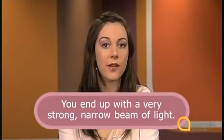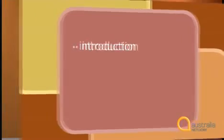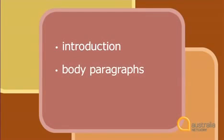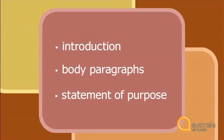Let's review how Imogen has structured her explanation. First, there was an introduction — she told us we were talking about the laser and gave some background. She then moved into the body of the description: she told us it is made up of three parts and listed them. In your writing, you might write three separate body paragraphs, one for each part. Then you'd finish off with a statement of purpose — what the object's overall purpose is.